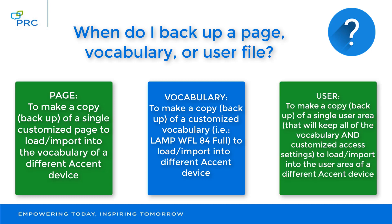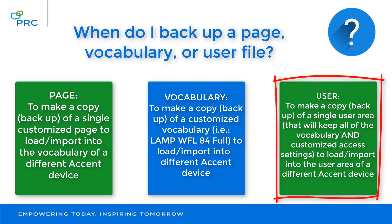Most people will decide to make a backup copy of a user area. You can do that when you want to save a single user area with all the vocabulary and the customized access settings to load or import into the user area of a different Accent device. So if you've made changes to the way the device interacts when you touch it, or if you're using eye tracking or head tracking, then saving a user area will keep all of those customized settings as well as any customizations you've made to your vocabulary, so that you can import it into another Accent device.